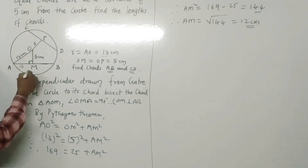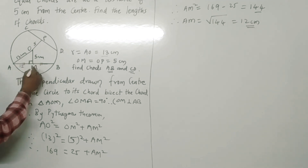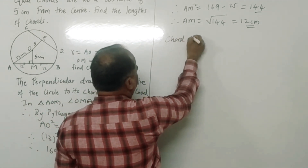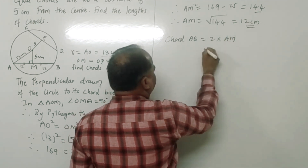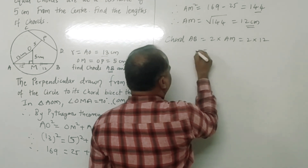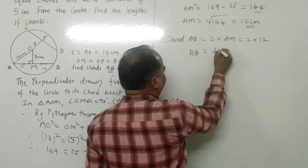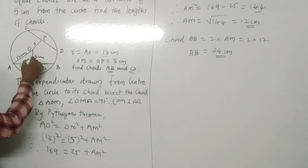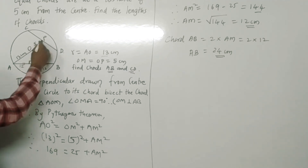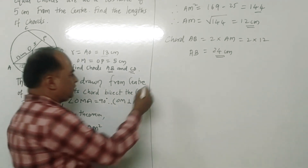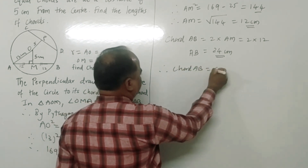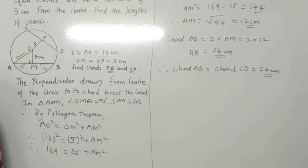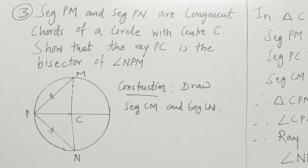So AM squared equals 144, therefore AM equals 12 centimeters. The perpendicular drawn from the center bisects the chord, so MB is also 12 centimeters. Therefore the length of chord AB is 2 into AM, which equals 2 multiplied by 12, which equals 24 centimeters. By the property that chords equidistant from the center are congruent, the length of chord AB equals the length of chord CD, which equals 24 centimeters.